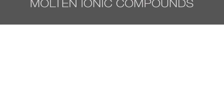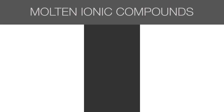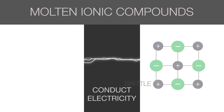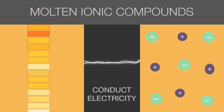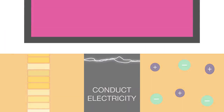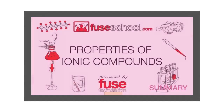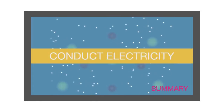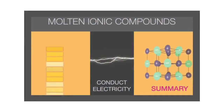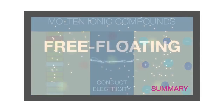Following on the same idea, molten ionic compounds can also conduct electricity. The lattice structure is broken at high temperatures, and so the ions become free-floating. In summary, ionic compounds have high melting points, are brittle, and can conduct electricity when dissolved in water or molten, due to the presence of free-floating ions.